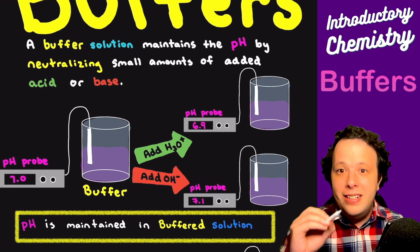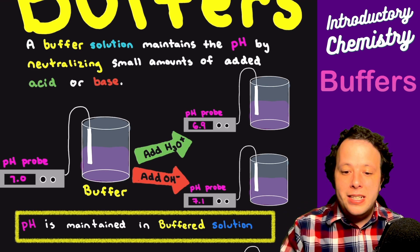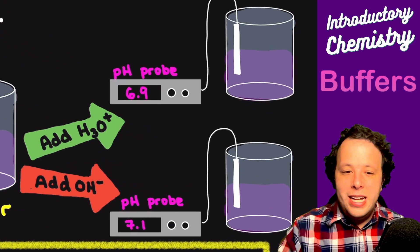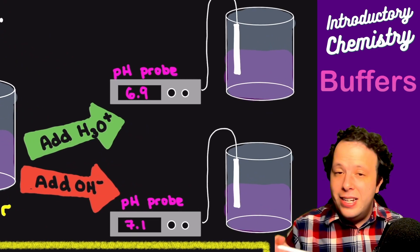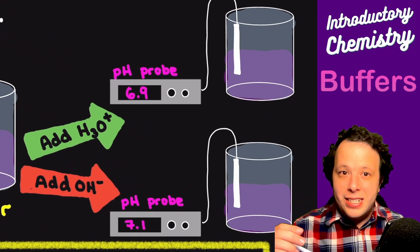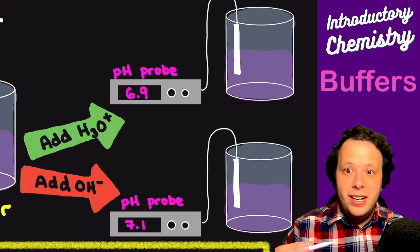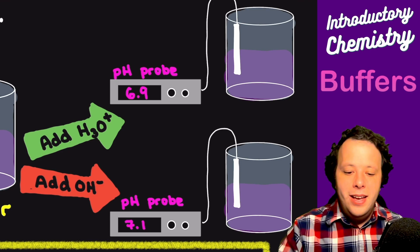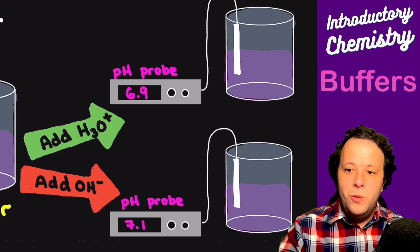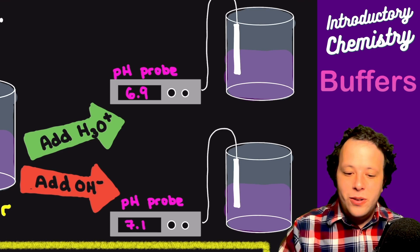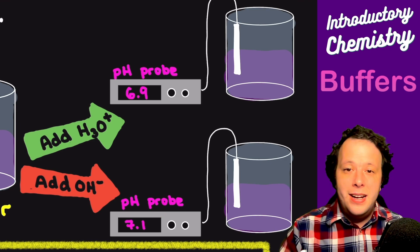If you add an acid to it or a base, you're going to notice the concentration did not change much. It was originally at a 7 and currently at 6.9 after you made it more acidic, and at 7.1 when you made it more basic. So there was not much of a change.